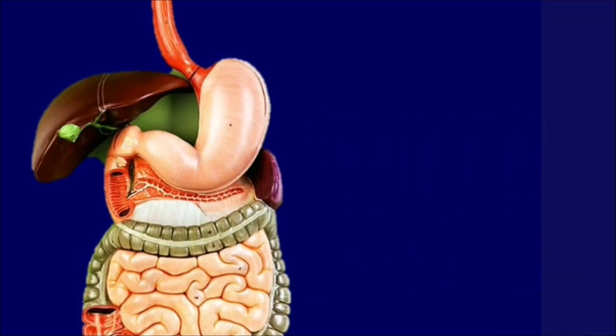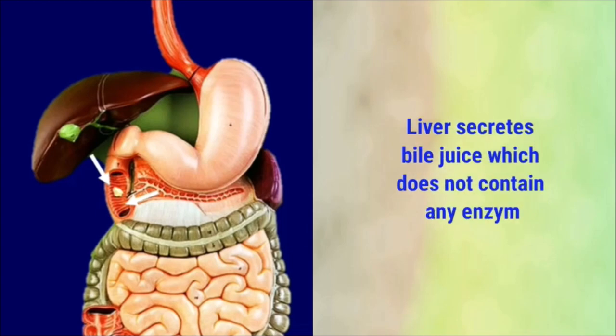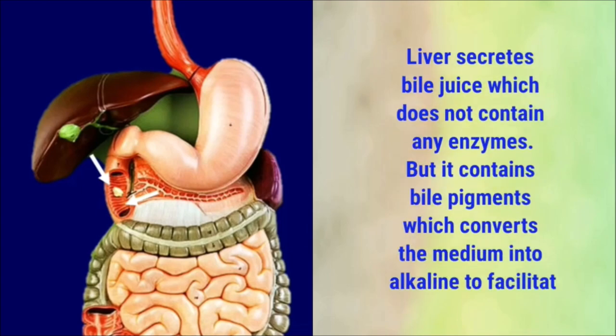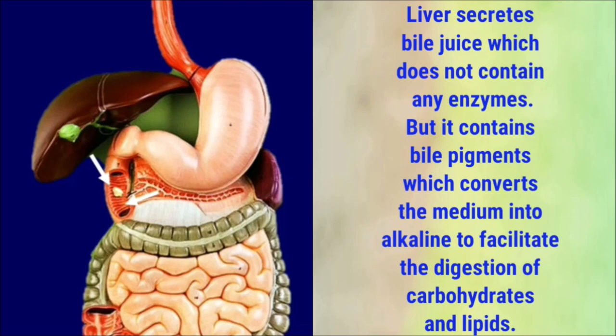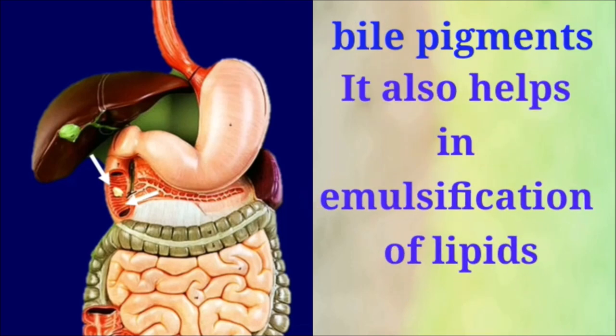After a period of time, the food enters the duodenum through the pyloric sphincter. The duodenum receives secretions from the liver and pancreas. Liver secretes bile juice, which does not contain any enzymes but contains bile pigments and bile salts. Bile salts convert the medium to alkaline to facilitate digestion of carbohydrates and lipids, while bile pigments help in emulsification of lipids.